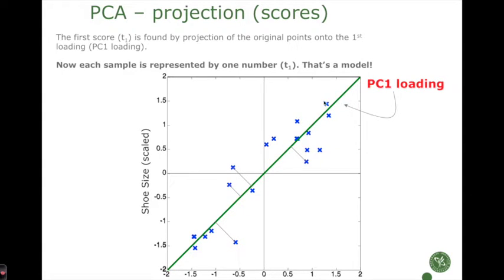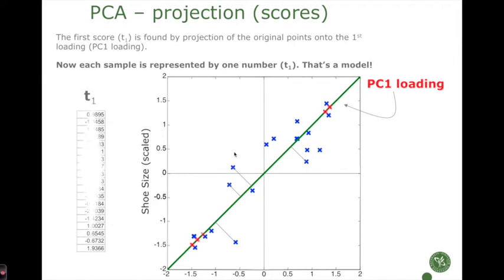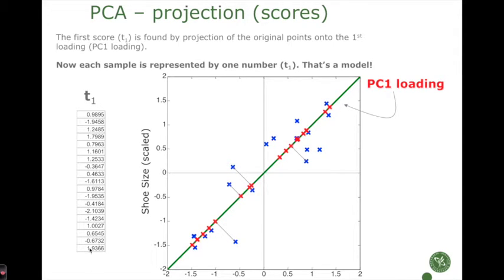When we have found the first direction in data, represented as this line, we would like to know what the scores are for each of the individual points. We do that by projecting each point onto the direction. Each point is projected down to the green line, and the length from the individual projection down to 0,0 is reflected by the score value. So there will be some which are high — those points up here — and some which are low, around minus two — those points down here.